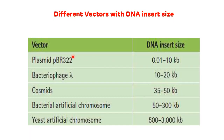This is the table showing different vectors with different DNA insert sizes. Plasmid can carry up to 0.01 to 10 kilobase pairs. Bacterial phage can carry around 10 to 20 kilobase pairs of DNA. Cosmids can carry around 35 to 50 kilobase pairs. BAC or bacterial artificial chromosome can carry around 50 to 300 kilobase pairs. And yeast artificial chromosome can carry around 500 to 3000 kilobase pairs of DNA.